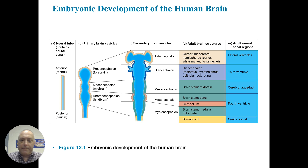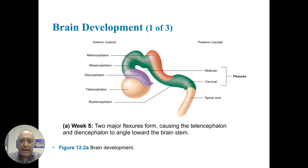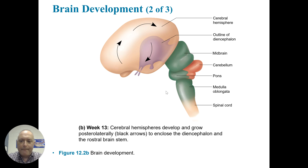In development, there are also some flexures that happen. Two flexures — the cervical and midbrain flexures — cause the telencephalon and the diencephalon to angle towards the brainstem. At about 13 weeks, the cerebral hemispheres develop and grow posterolaterally, as these arrows show, to enclose the diencephalon and the rostral brainstem. Here we can see the cerebrum, the midbrain, the pons, medulla, spinal cord, as well as the cerebellum.